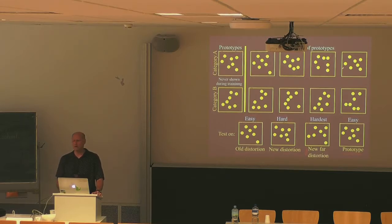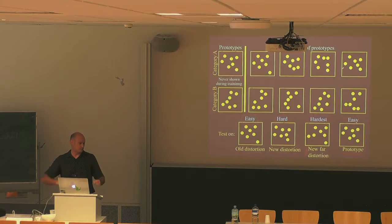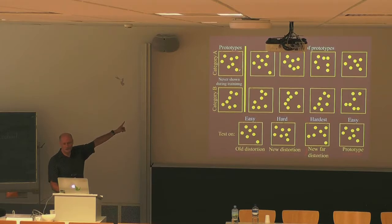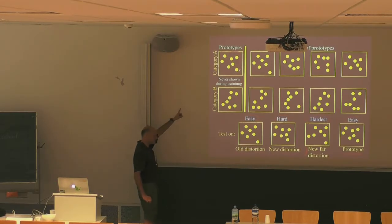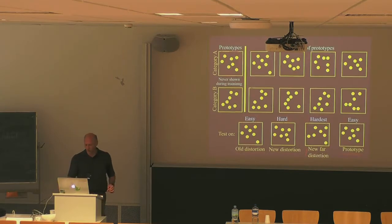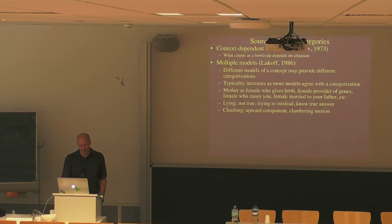Researchers have also tried structured prototypes — where dots form the outline of a triangle — which work even better as prototypes. But using random dots is considered a fairer test of prototype extraction, because there's nothing intrinsically special about the prototype item compared to distortions. If people still categorize it well, it demonstrates true abstraction rather than recognition of an obviously good form.